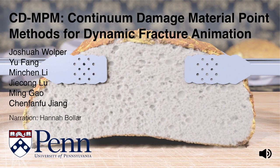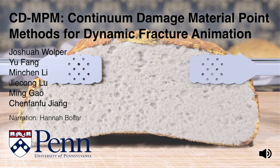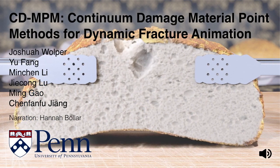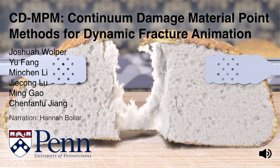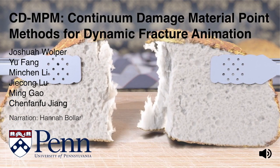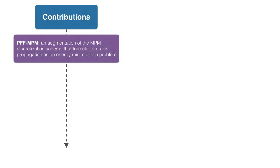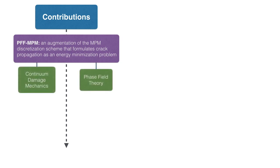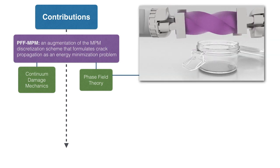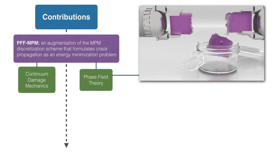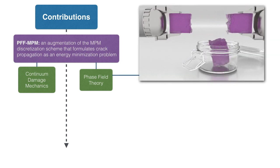We present CDMPM, a set of continuum damage material point methods for efficiently simulating dynamic, brittle, and ductile fractures. Our first method, PFFMPM, augments the material point method with a variational formulation for crack evolution by incorporating a non-local continuum damage-based phase field fracture model through a novel weak form discretization.